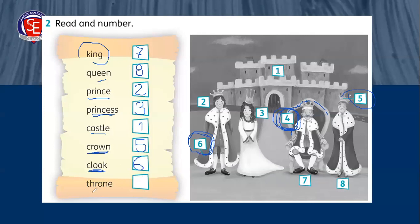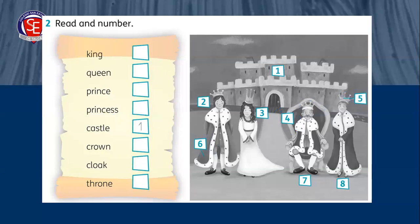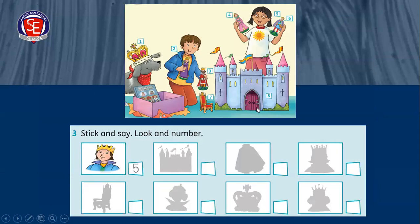Y nos queda la última palabra: throne, que significa el trono — ese asiento grande que ocupan los reyes. The word throne is number four. Summary: king — number seven; queen — number eight; prince — number two; princess — number three; castle — number one; crown — number five; clock — number six; and throne — number four. And now we have to continue with the next part.